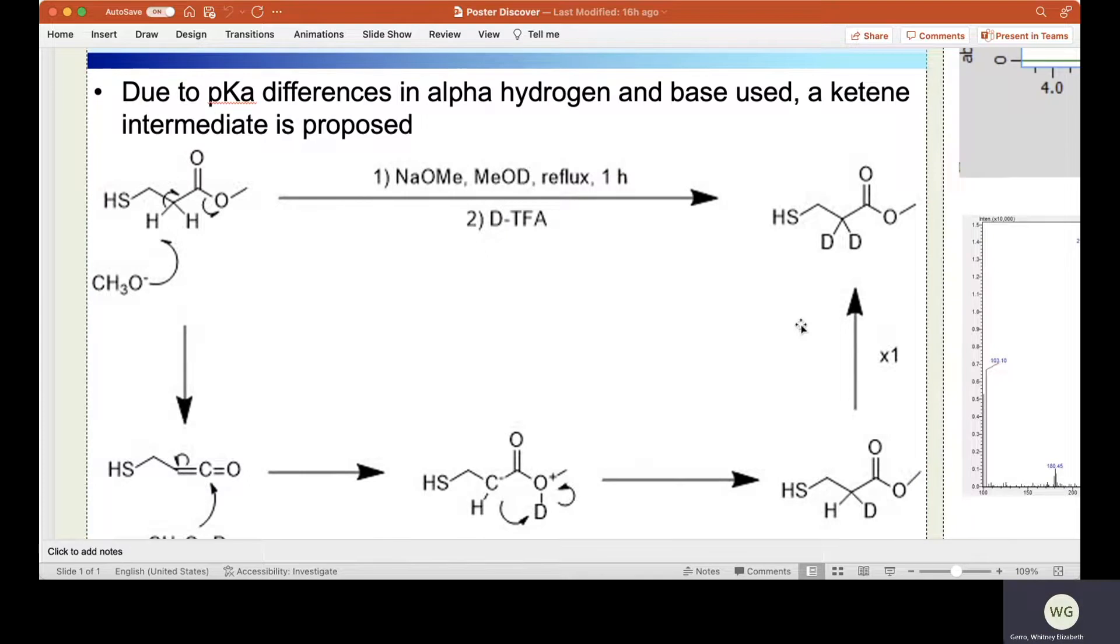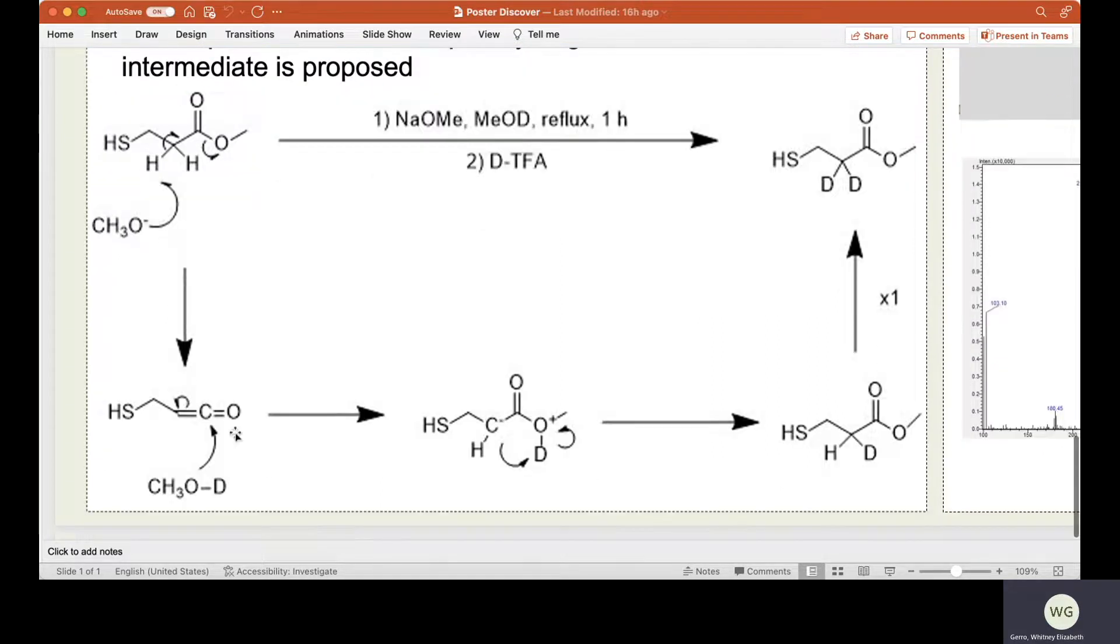In our proposed mechanism, we utilize sodium methoxide with deuterated methanol as our source of deuterium. When the methoxide attacks the protons on the alpha carbon, a resulting electron movement gives a carbon-carbon double bond directly next to a carbon-oxygen double bond, also resulting in the kicking off of the methoxide group as a leaving group. This resulting intermediate species is a ketene, which then undergoes nucleophilic attack by the deuterated methanol, and a subsequent rearrangement gives us our original ester with the deuterium on the alpha carbon.